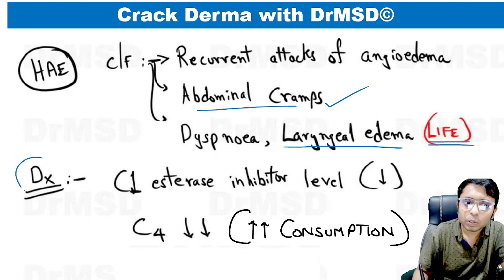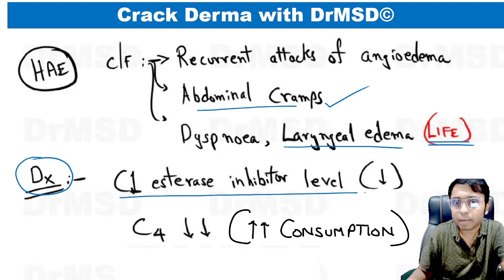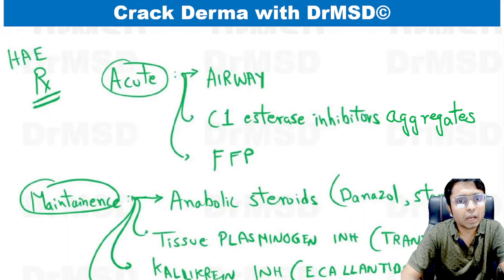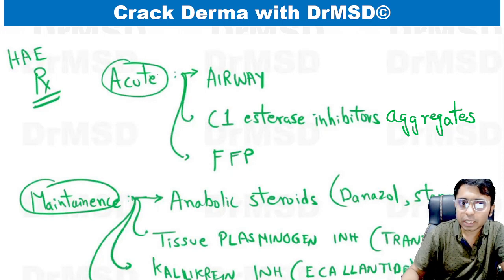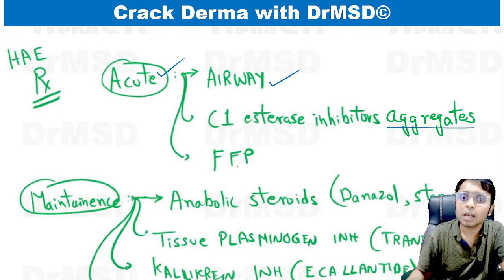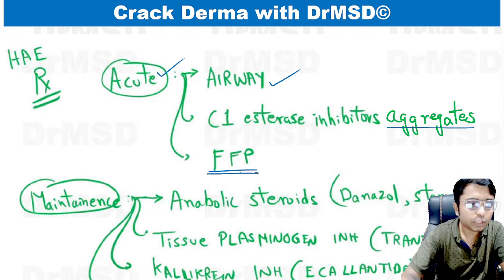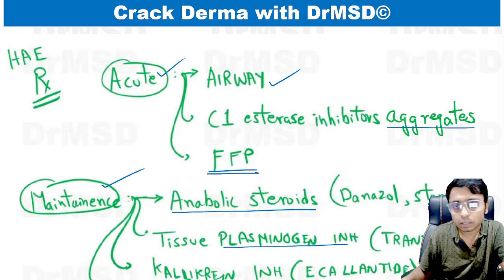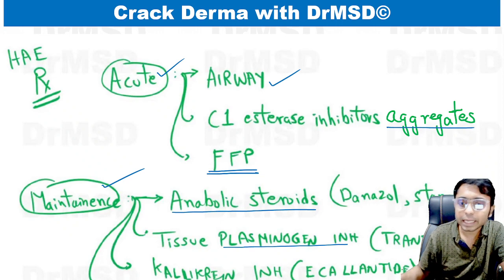In the diagnostic workup, C1 esterase levels can be reduced. Also, because of the complement system being overactive, increased consumption leads to reduced complement C4 levels. In treatment, the acute phase involves airway maintenance, and we can give aggregate C1 esterase inhibitor — though it is costly — or fresh frozen plasma. For maintenance, we use anabolic steroids like danazol and stanozol, the plasminogen inhibitor tranexamic acid, and also the kallikrein inhibitor ecallantide.